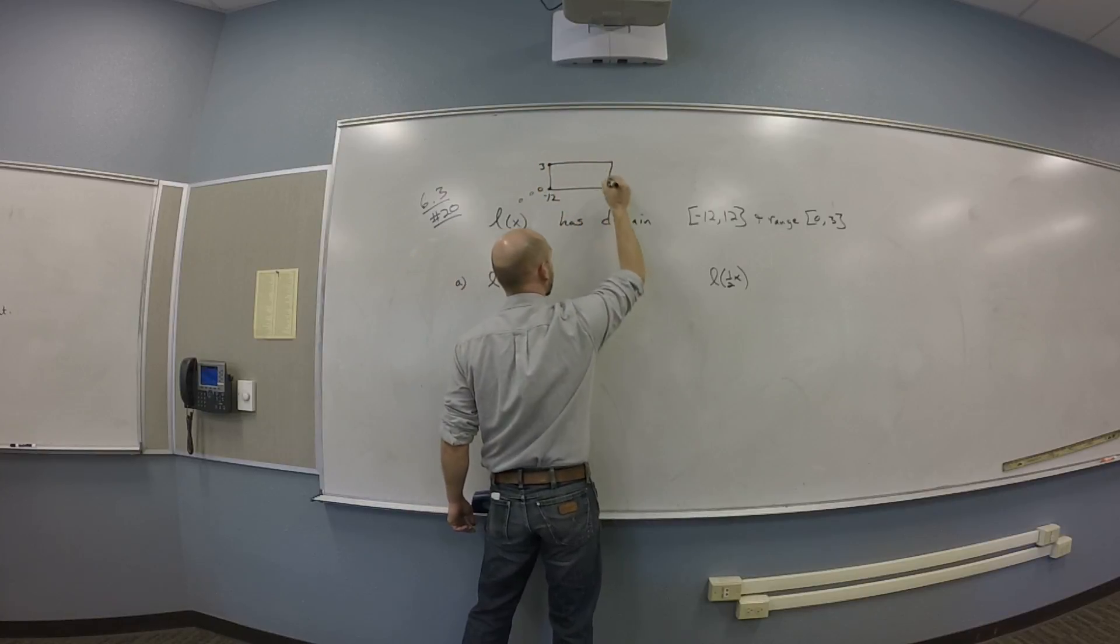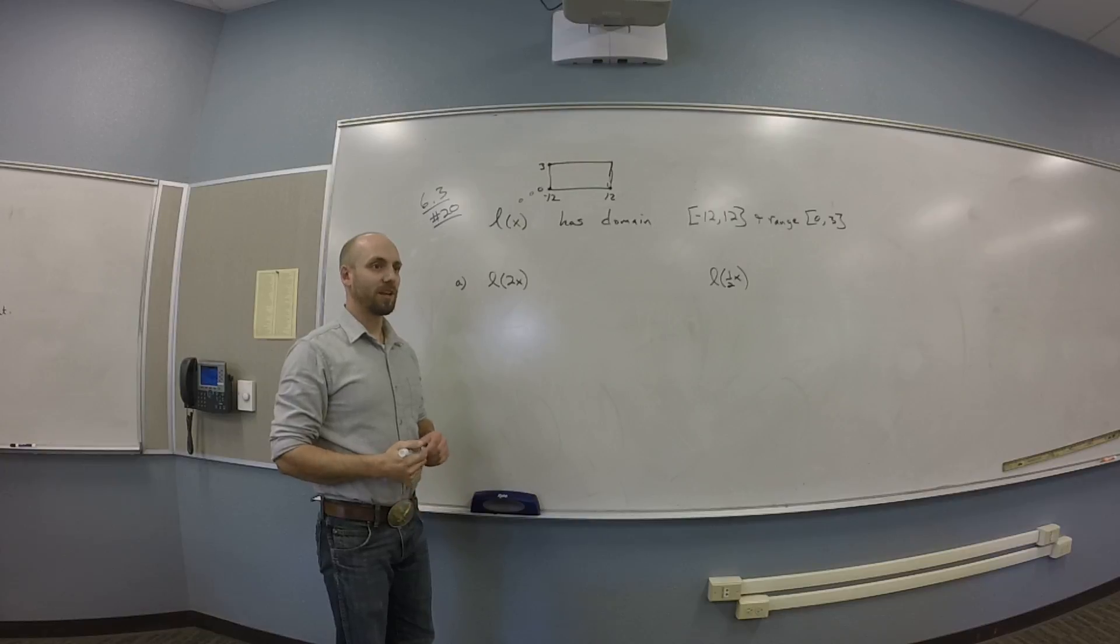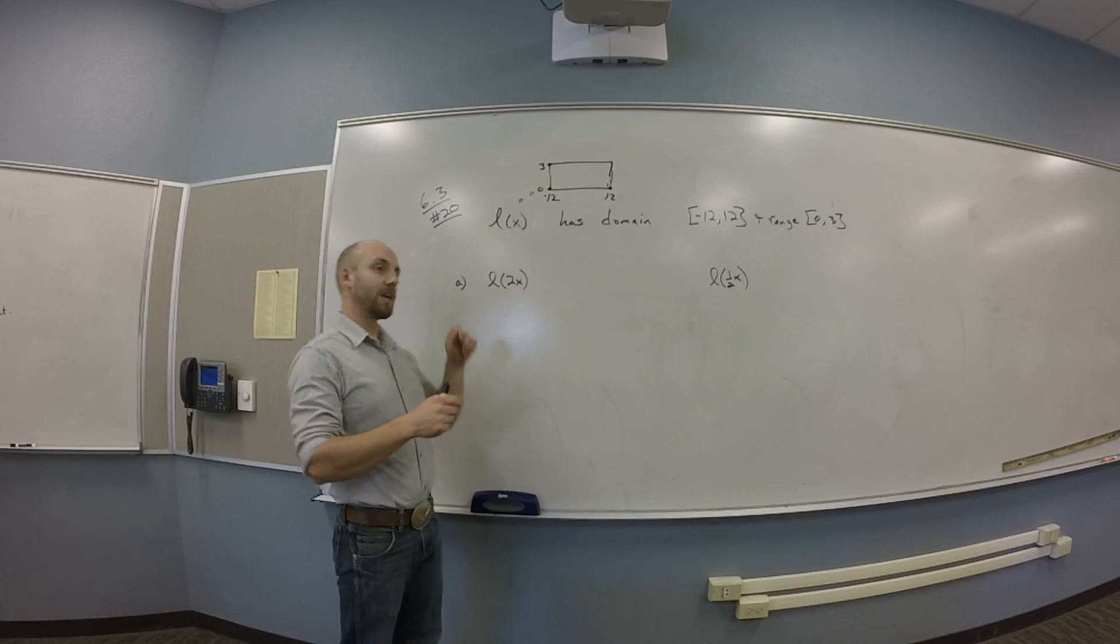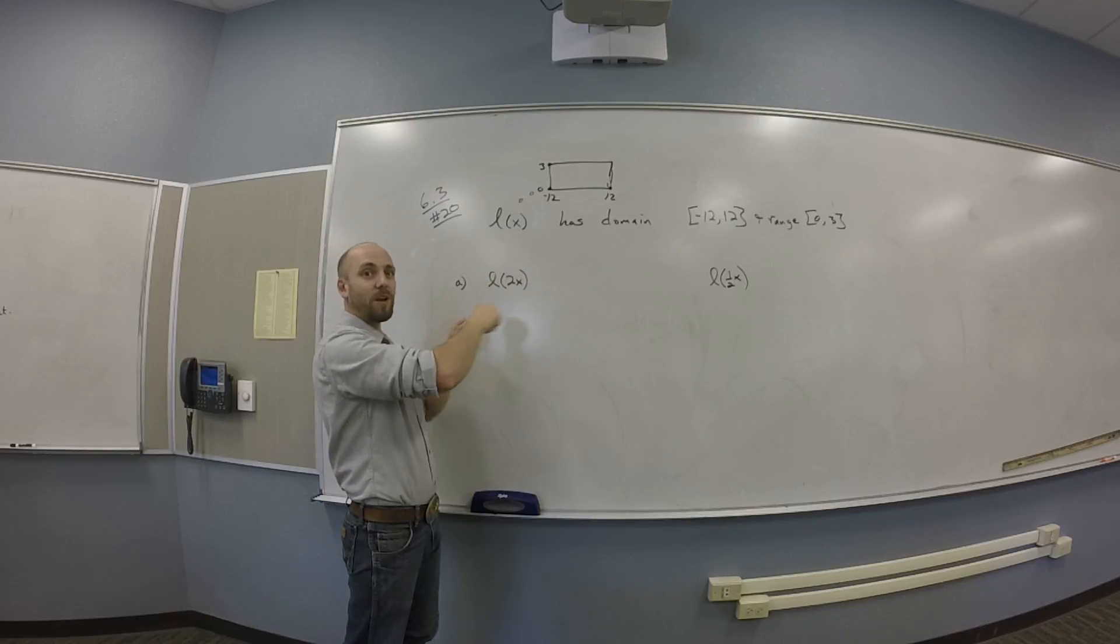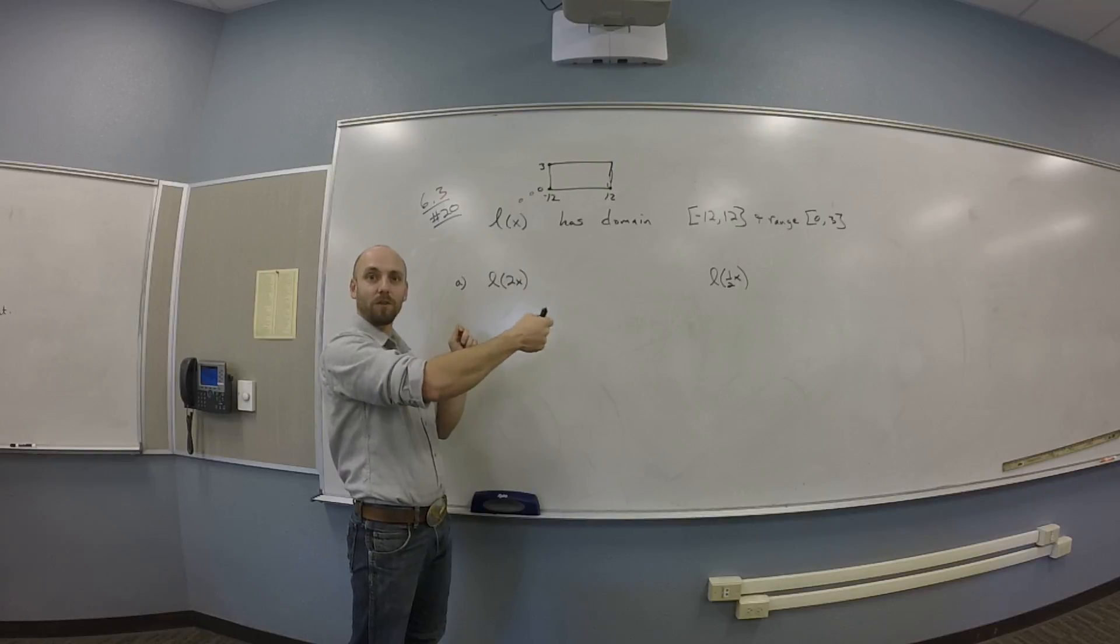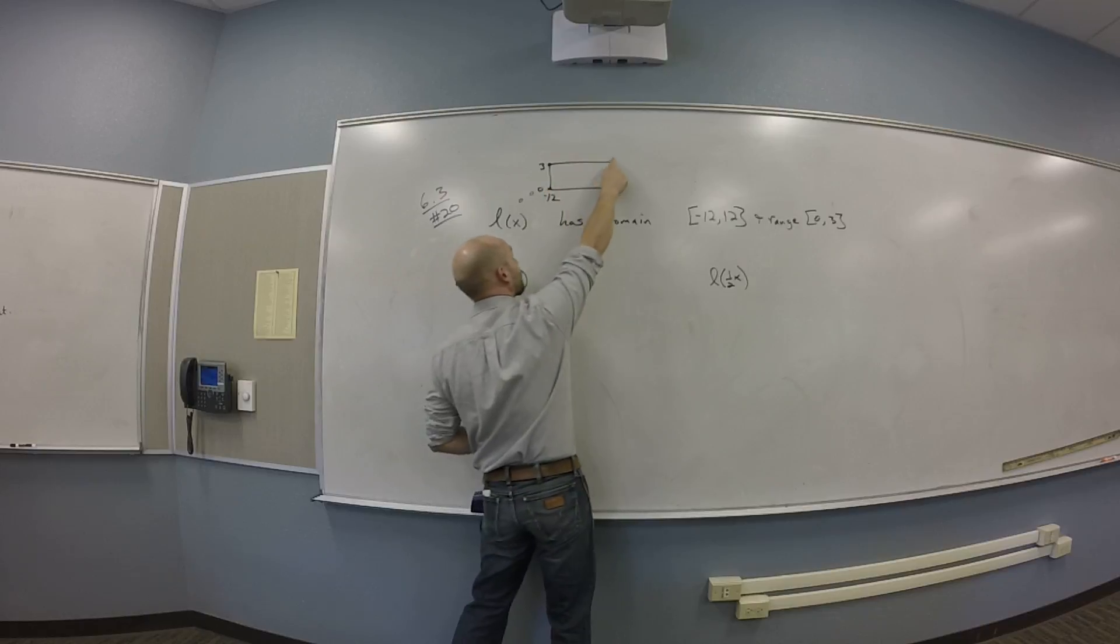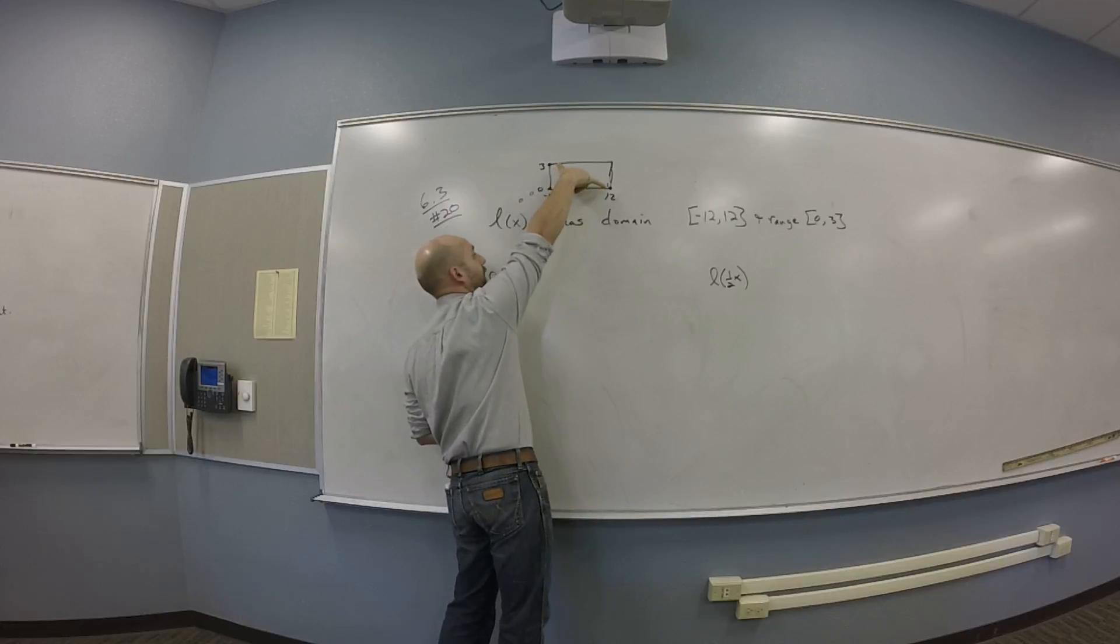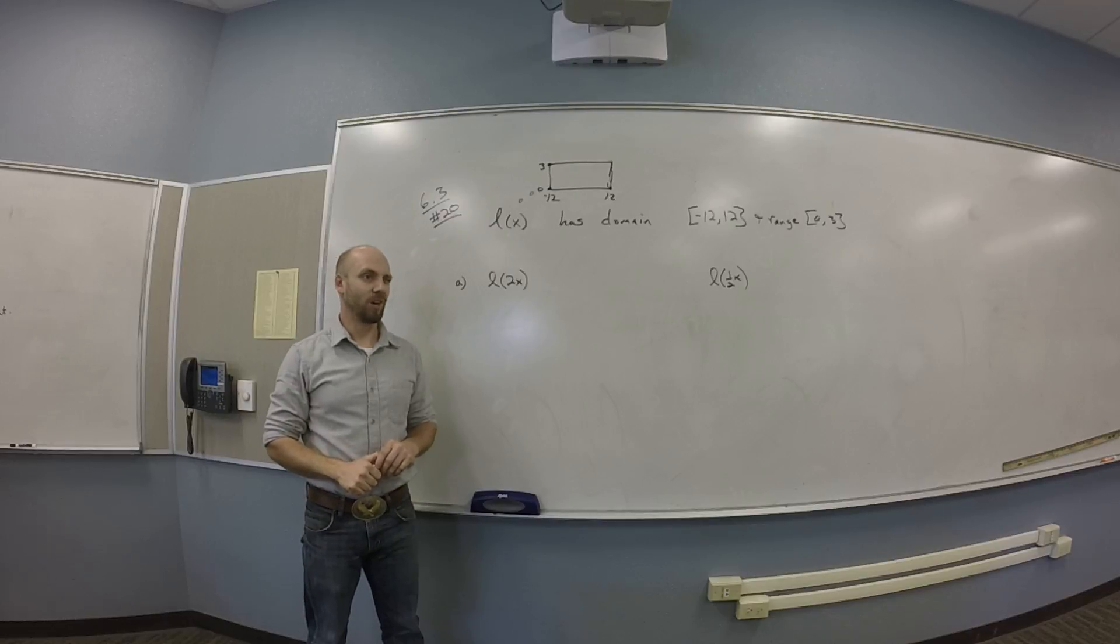So, some place in this box is L. I don't really know what it does, but I do know that it lives in that box. I also know that it goes... I don't know it necessarily goes continuously from one end to the other, but I know at least everything in between minus 12 and 12 goes somewhere. And I know that everything between 0 and 3 gets covered. The easiest way to do that would be to just draw a line from this corner of the box to that corner of the box. But of course, it could also look like this or it could look like parts of that or other weirdness. Something weird could go on.